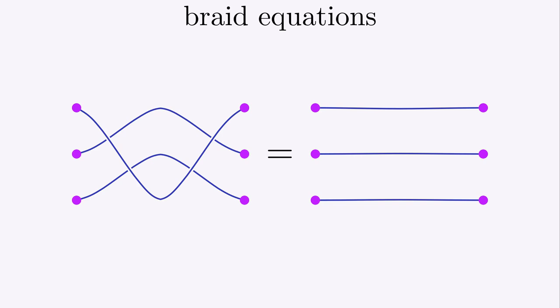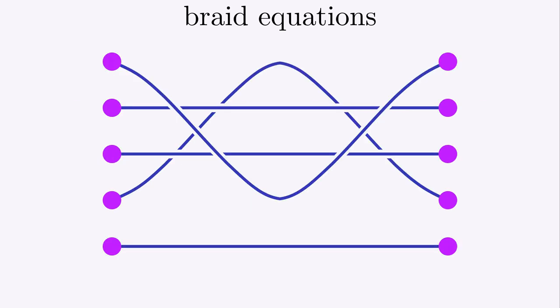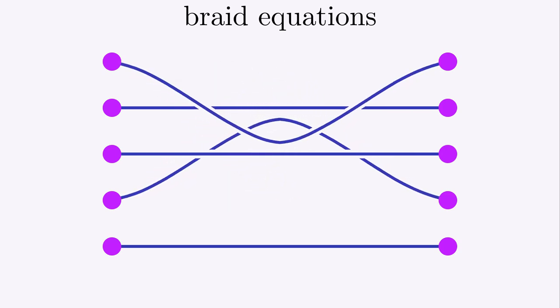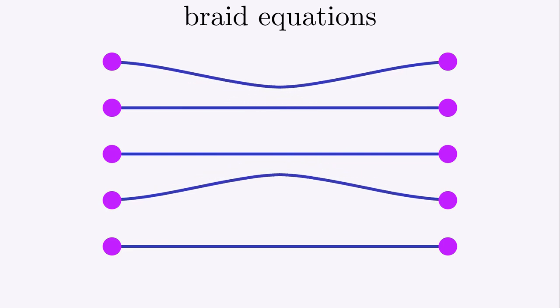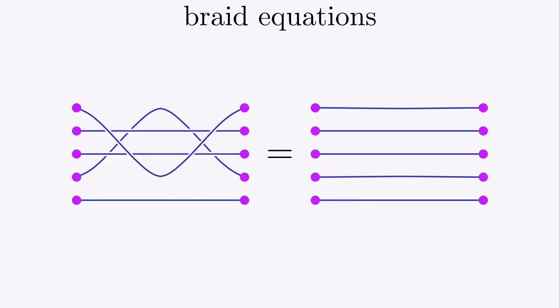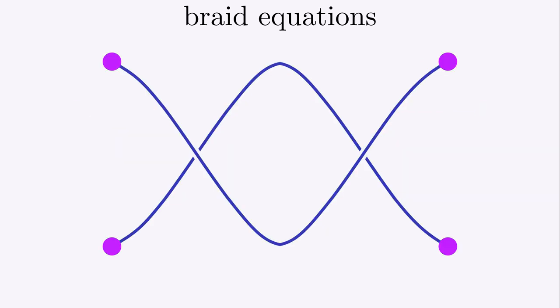So that's another equation. And there's all kinds of equations we could make here. Swap, swap, swap, swap, swap, unswap, unswap, unswap, unswap, unswap. Actually, all of these equations come from this basic identity. Swap, unswap is nothing.